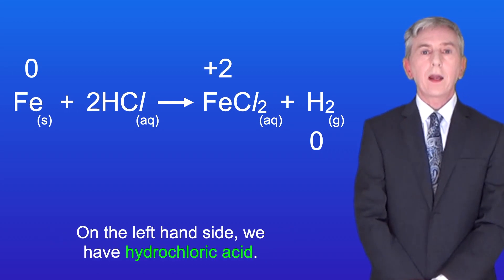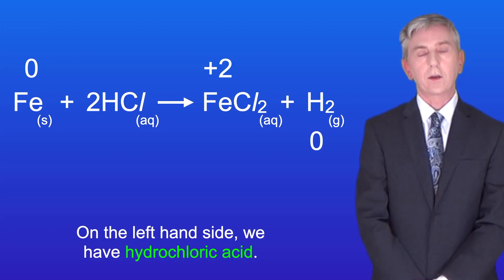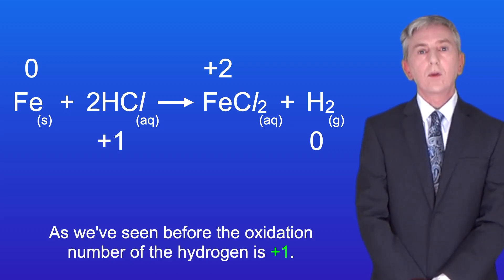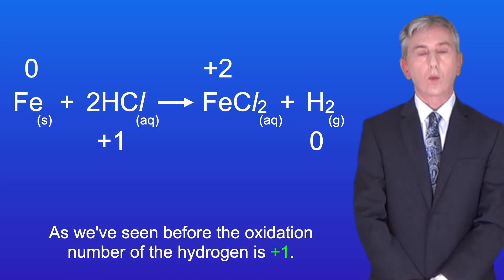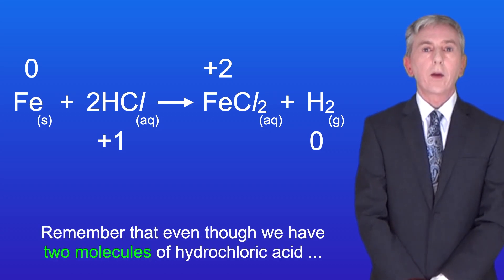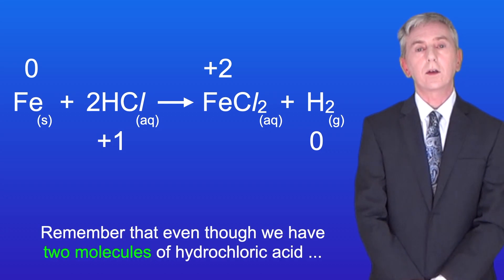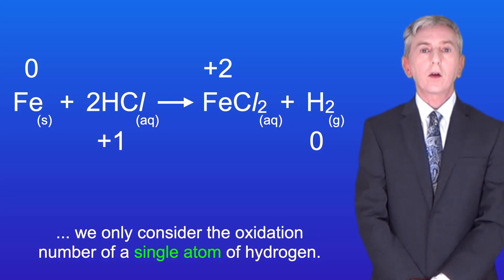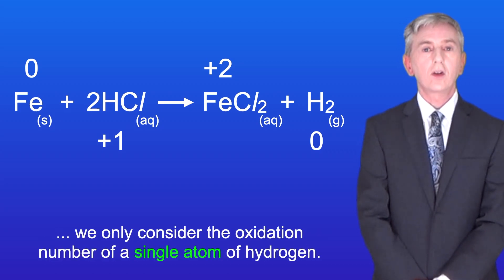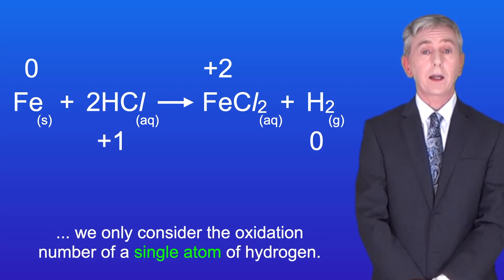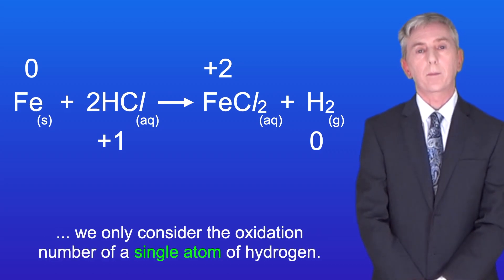On the left hand side we have hydrochloric acid. As we've seen before the oxidation number of the hydrogen is plus one. And remember that even though we have two molecules of hydrochloric acid we only consider the oxidation number of a single atom of hydrogen.